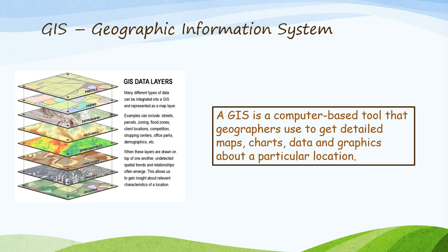A GIS, or geographic information system, is a computer-based tool that geographers use to get detailed maps, charts, data and graphics about a particular location.